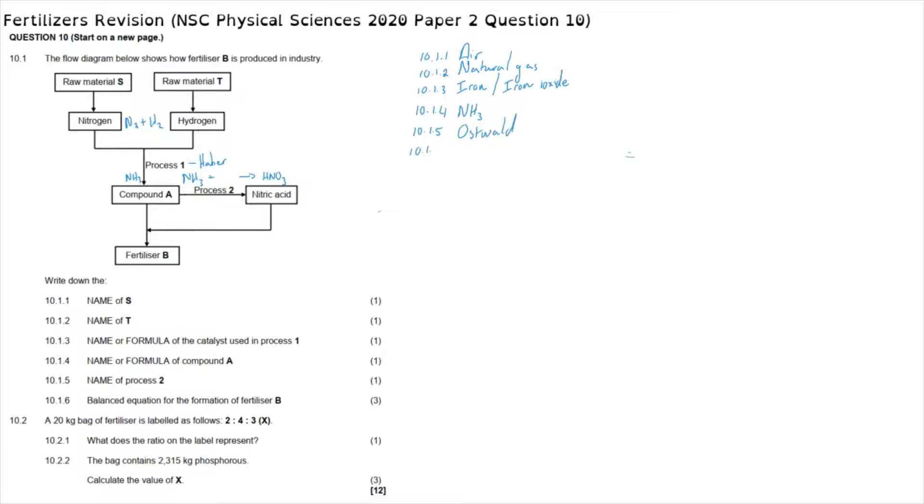Question 10.1.6: we are asked to write down the balanced equation for the formation of fertilizer B, essentially the balanced equation for how we use nitric acid and combine it with ammonia to form ammonium nitrate. Compound A, NH3 ammonia, is combined with the nitric acid that we produced in the Haber process, and that is going to form ammonium nitrate, that being NH4NO3. The equation as given there is balanced.